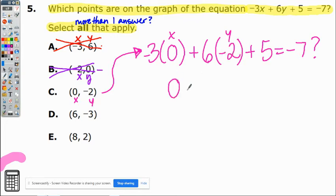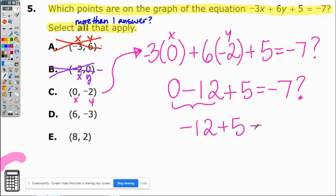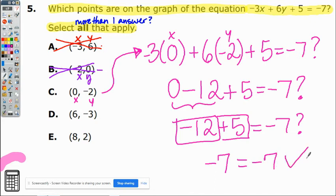Anything times 0 is 0. Positive times negative is -12. Bring down the 5 equal to -7. 0 minus 12 is -12, and then if you have a negative and a positive that means you subtract them and keep the sign of the bigger number. So -7 does equal -7. We have our first correct answer.